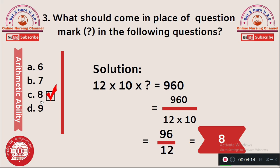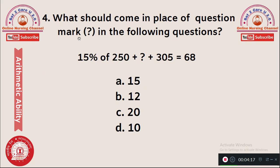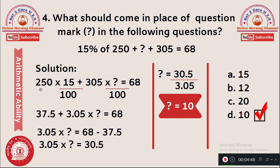Question 4: Which number replaces this question mark? 15% of 250 + (? % of 305) = 68. Options: A) 15, B) 12, C) 20, D) 10. To solve, write 15% as 15/100. So: (250 × 15/100) + (305 × ?/100) = 68.